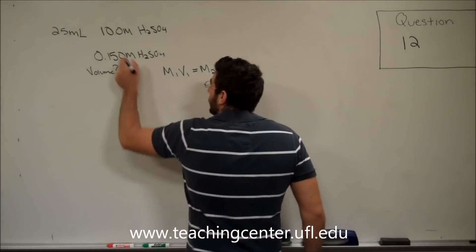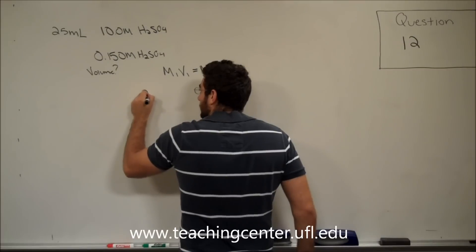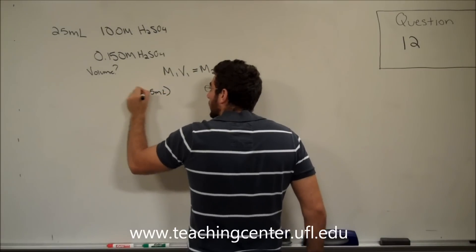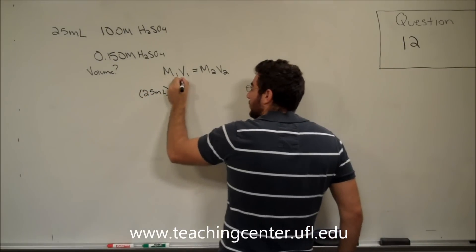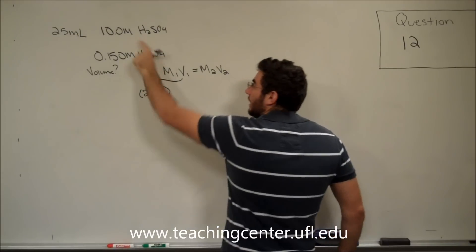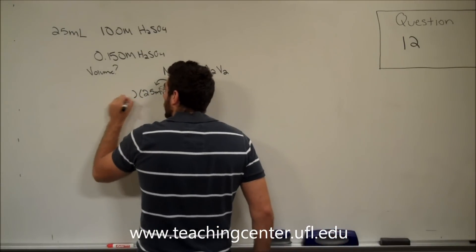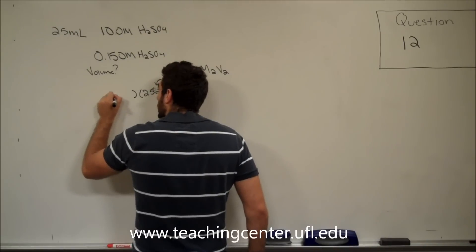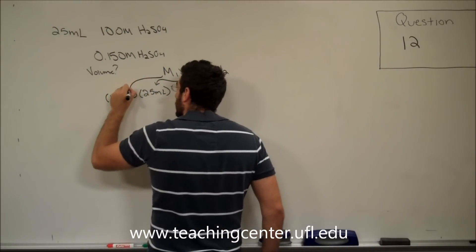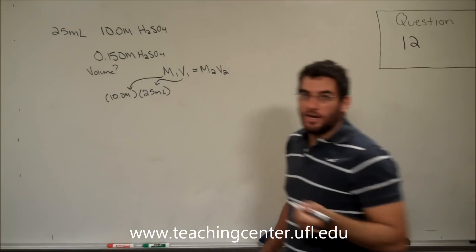So in this case, we have a 25 milliliter solution. So, that's volume 1. Then it says, we have a 10 molar solution of H2SO4. So, that is our first molarity.